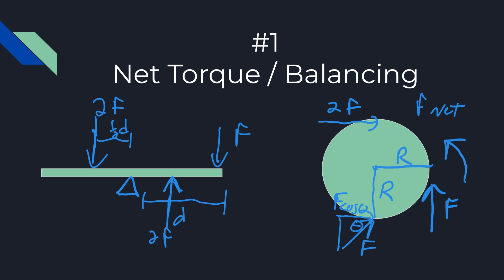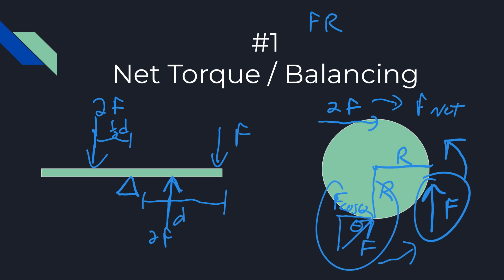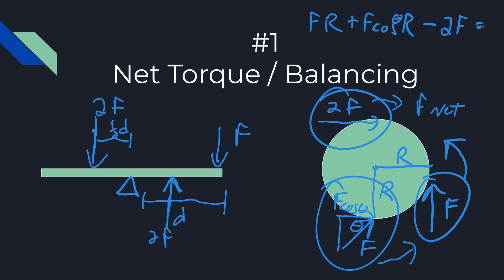Let's find the net torque. This first force is producing a counterclockwise torque, the second is producing a clockwise torque in the opposite direction, and the third down here is also producing a counterclockwise torque. So we get: F times r, plus F cosine theta times r, minus 2F times r. That equals the net torque. Simplified, this would be (F cosine theta minus F) times r, or (F cosine theta + F - 2F) times r.